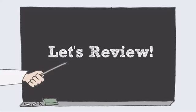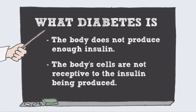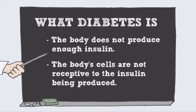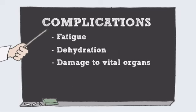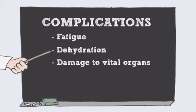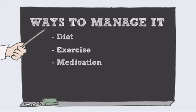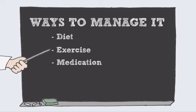Okay, let's review. We've talked about what diabetes is, a condition where either the body does not produce enough insulin, or the body's cells are not receptive to the insulin being produced. We've seen what complications can arise from it, such as fatigue, dehydration, and damage to vital organs. Finally, we've discussed ways to manage it through diet, exercise, and medication.